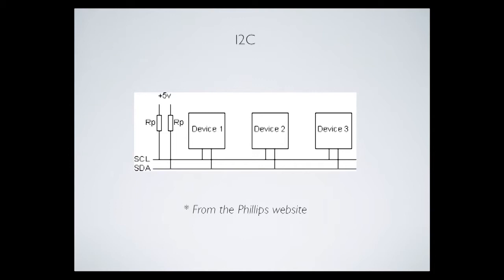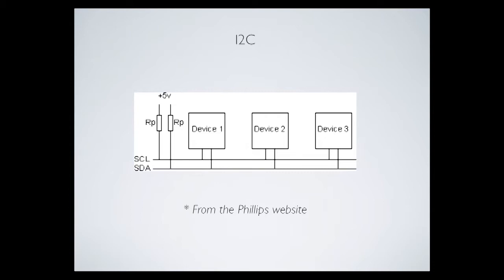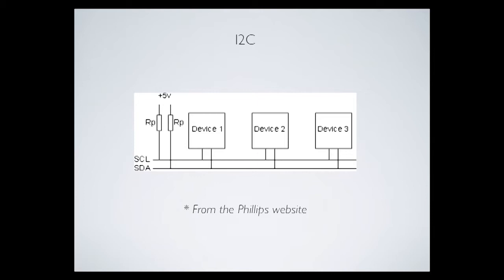Basically, you send out a start, then the device address — which device you want to talk to — then a command register address, then the data. One device may have multiple functions; you address the device, put in the register address for the function you want, then the option for that function. On an LCD it's simple because you're always writing to it, not reading. The protocol allows for reading and writing, but I'm going to focus on just writing for this episode.